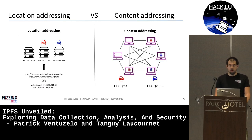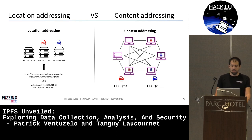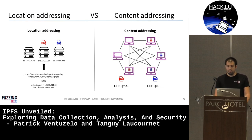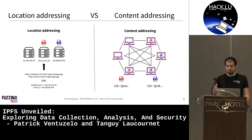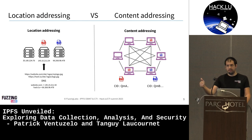The idea is pretty simple. It's content addressing instead of location addressing. What that means is, instead of having files stored on a server with direct communication over IP, you will get the files stored by a node with a dedicated CID — a unique identifier. And when you request the file, it will be that dedicated peer node that returns the file to you.